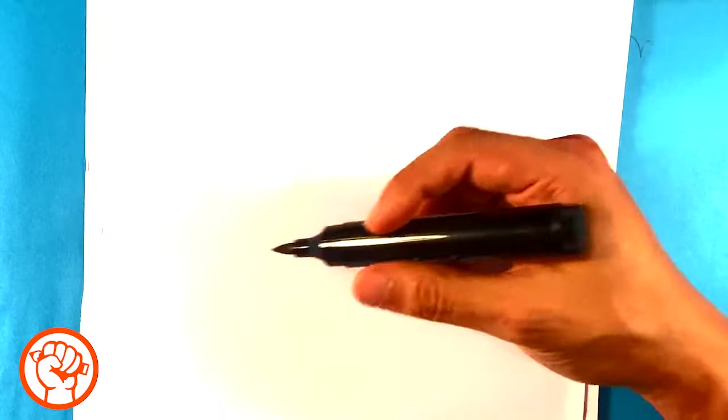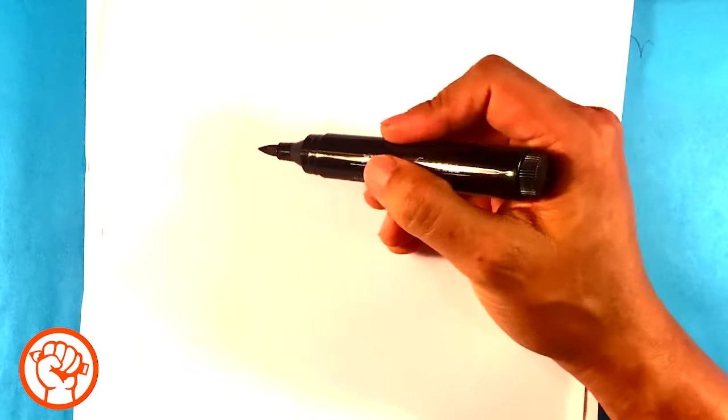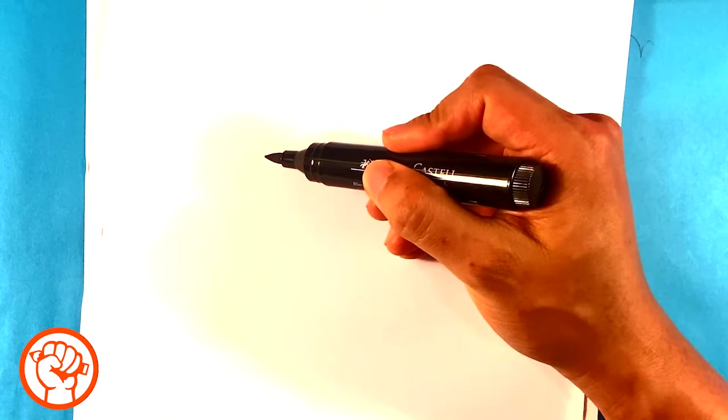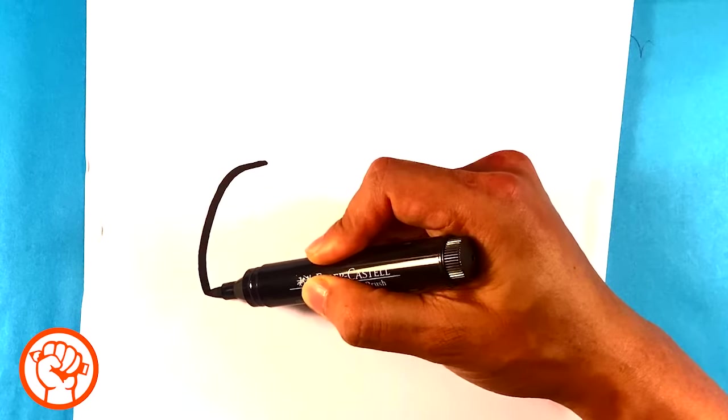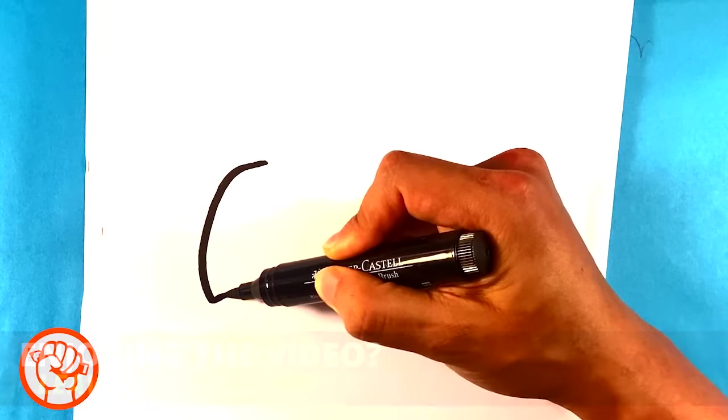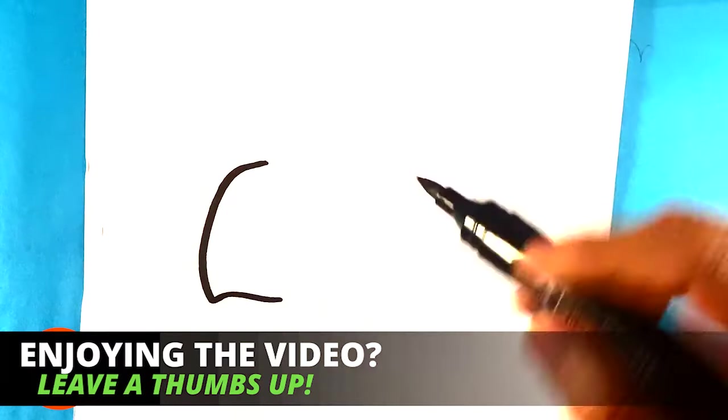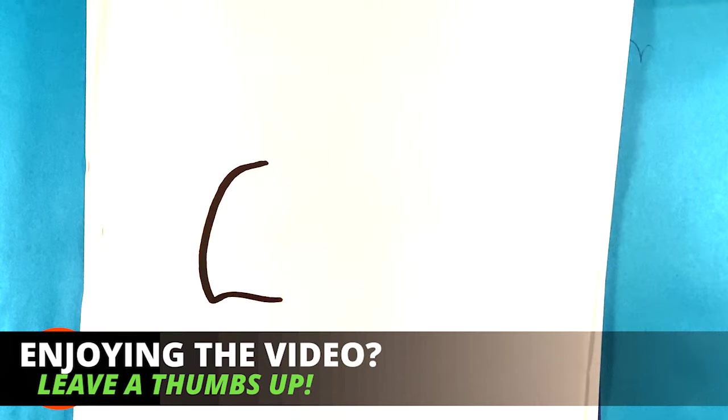So first thing I'm going to do is the hornet's going to be facing this direction. So I'm going to draw the back end of the hornet. Right now I'm going to draw the rear area, a very general shape like so.